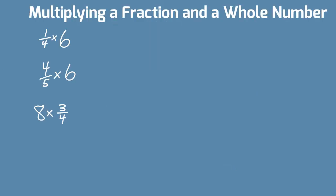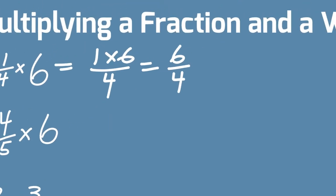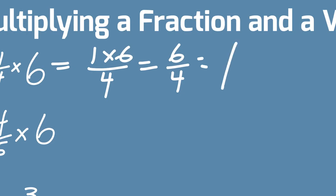Let's now do some practice without the bar models. 1 fourth times 6. Remember, we can write that as 1 times 6, all over 4. We know that 1 times 6 is 6, so we end up with 6 fourths, which is improper. 1 and 2 fourths. Of course, please always simplify. Simplifies to 1 and 1 half. Good.